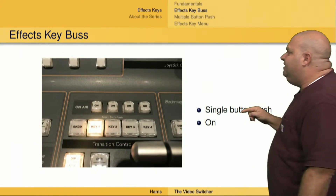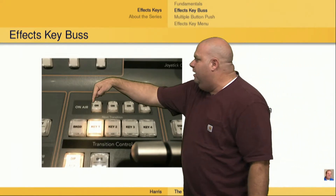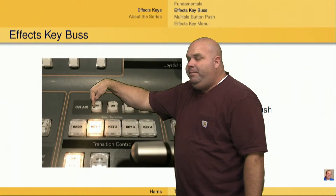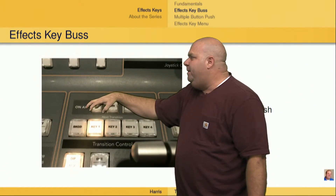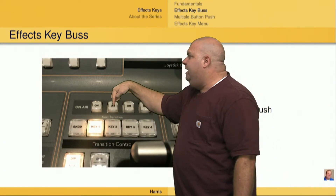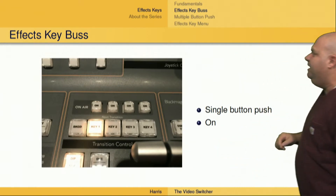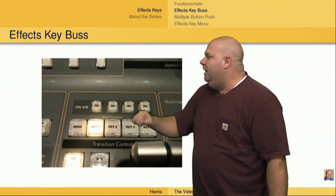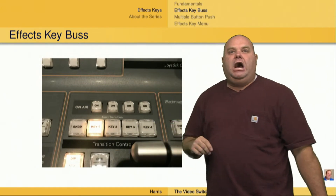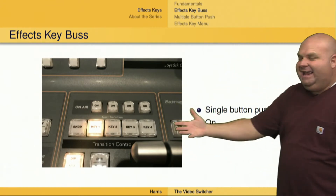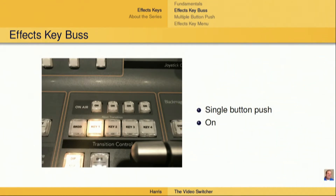We've got the ability to do a single button push on the on-air button. If I just push that button right there that says on — right now it's not lit up — I push that button, it's going to light up, and it's going to bring key one live. I could also push the on button on key two, that's going to bring that live. Or I could just push the key one button here, and then use the cut or the auto buttons, or the T-bar, to actually bring that key live or take it out of live using the transition control buttons: cut, auto, or the T-bar.